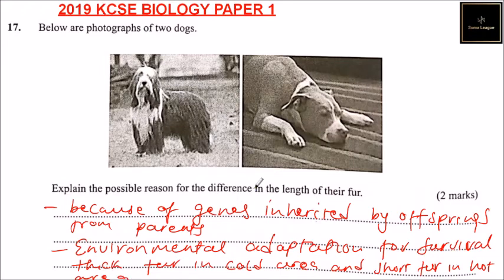So those are the possible reasons why the two dogs have a difference in the length of their fur. And that's how you answer that question. You get two marks.